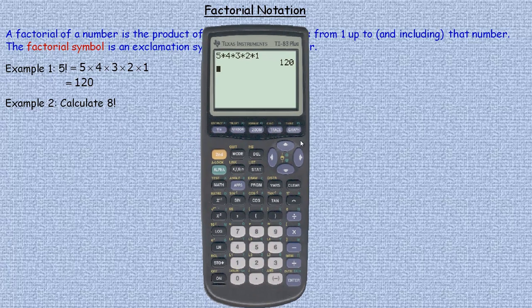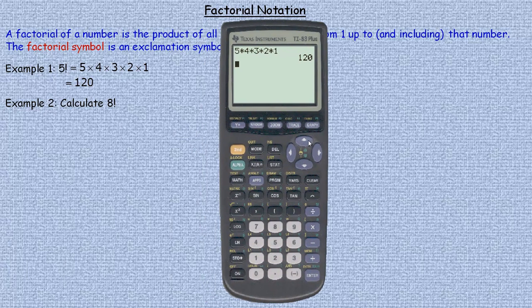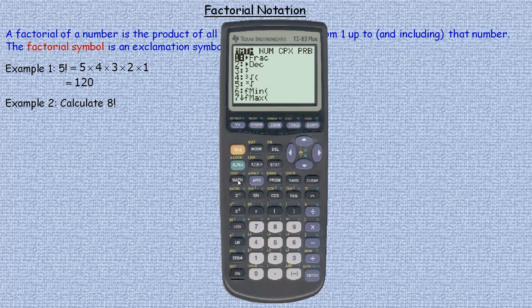There's 120. Now there is an easier way to do that. All scientific calculators have a factorial function on them. So I want to do 5 factorial. In the Texas Instruments it's usually in the math menu and you go over to the probability. There's the exclamation symbol for the factorial notation. So I want to hit number 4, and that gives me the 120.